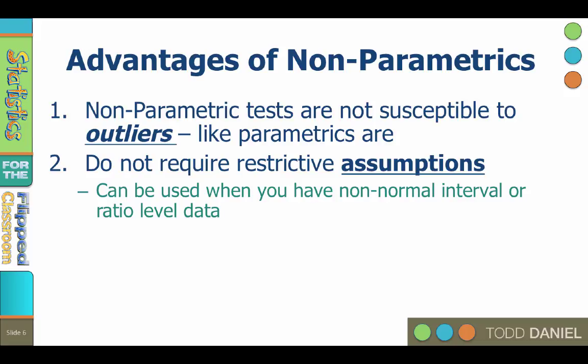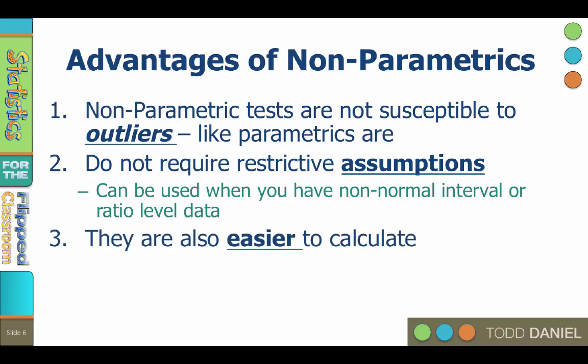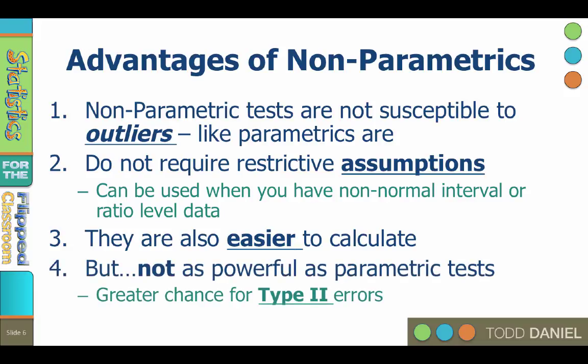Typically, non-parametric statistics are only used when the data are too skewed to use a parametric test. Another advantage is that non-parametric statistics are typically easier to calculate by hand, and we will practice doing some of them by hand in order to learn them. However, the main disadvantage of non-parametric statistics is that they are not as powerful as parametric tests. That means they are more likely to miss an effect that truly exists, meaning you make a type 2 error.